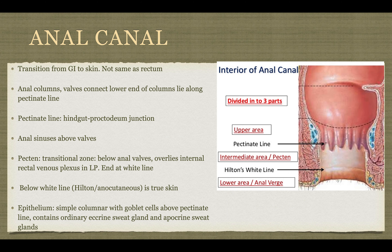The anal canal is the transition from the gastrointestinal tract to the skin, very different from the rectum. It's divided into three parts: the upper area above the pectinate line, the intermediate or transitional layer, and the white line toward the end of the rectum. There are anal columns, and valves connect the lower end of the columns along the pectinate line. From embryology, the pectinate line comes from the hindgut-proctodeum junction.